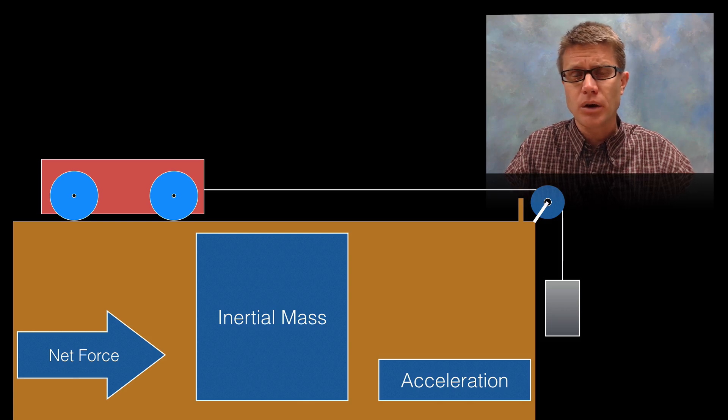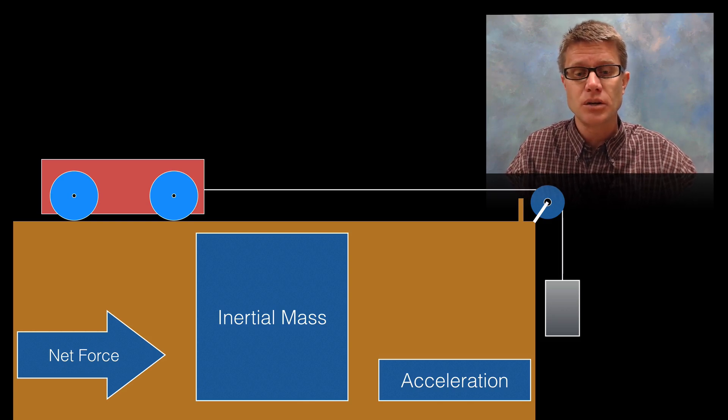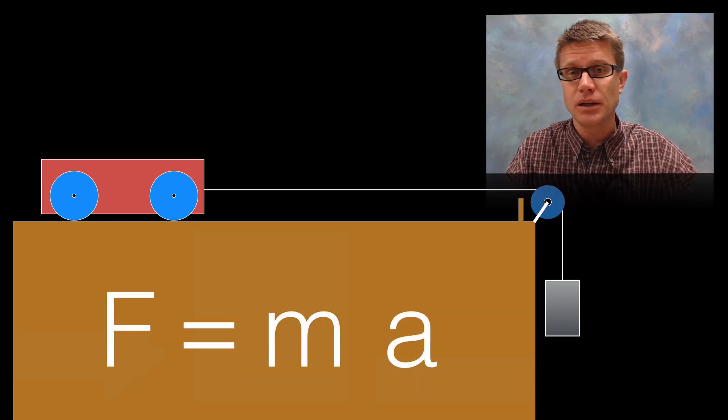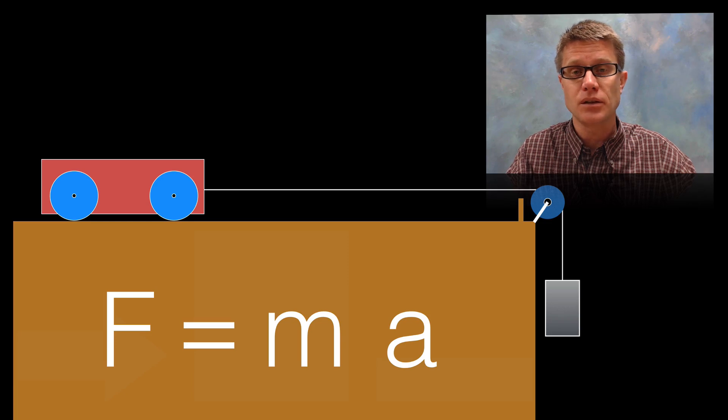So how could you set up an equation where we have force on one side and then this indirect relationship between inertial mass and acceleration? Well, you are probably familiar with this formula. It is Newton's second law. Force equals mass times acceleration.